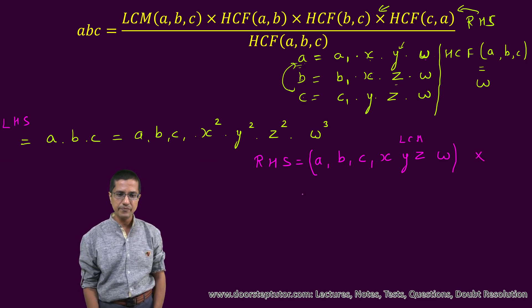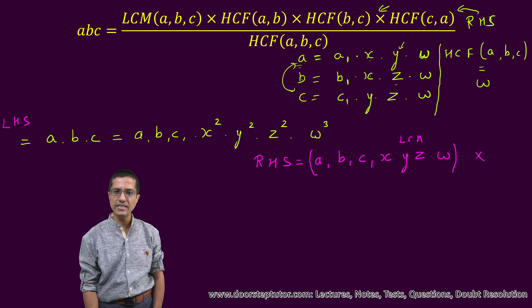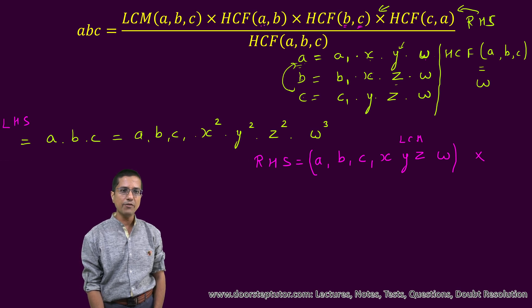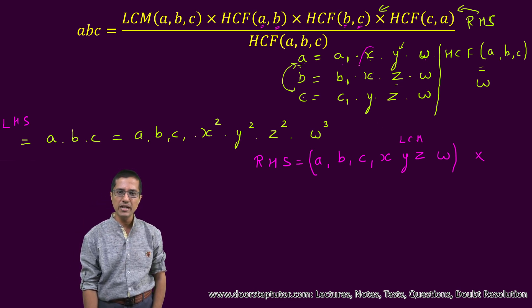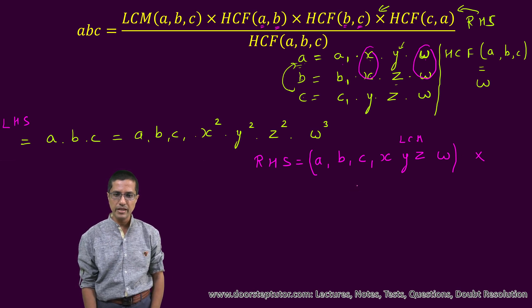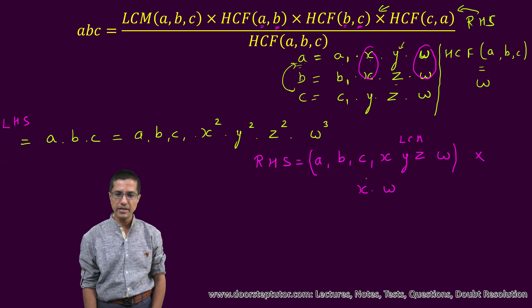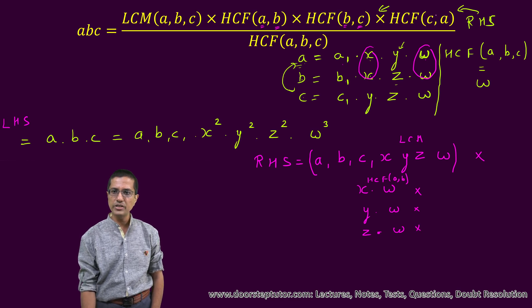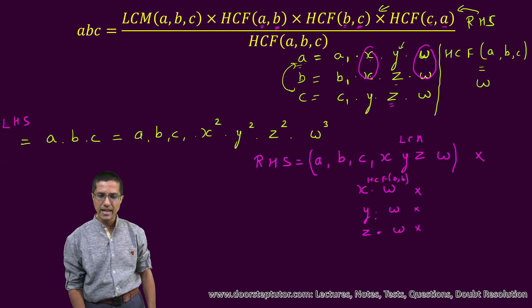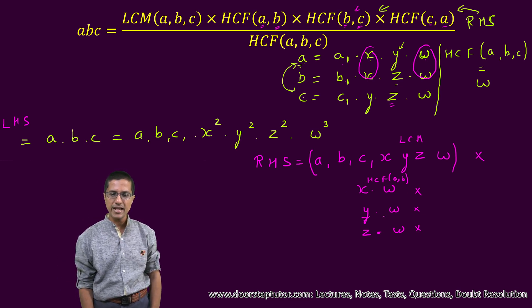This is multiplied with the HCF of BC. Sorry, HCF of AB will come first. HCF of AB means that we are taking all the factors common between A and B. Between A and B, we already know what factors are common: X is common and then W is also common. We cannot ignore that W. So this will become X into W, and this is the HCF of AB. Similarly, for other terms also, we will have Y into W and then we will also have Z into W. This Z into W will come from CA which has Z as common factors, and YW came from the HCF of BC which has Y and W as the common factors.